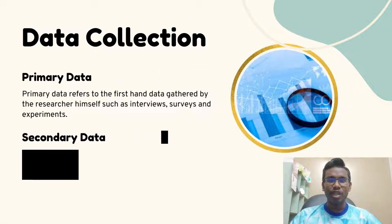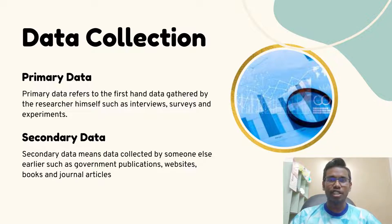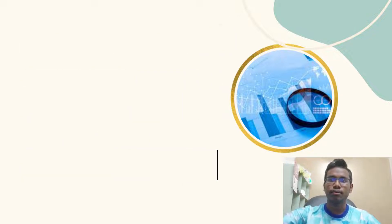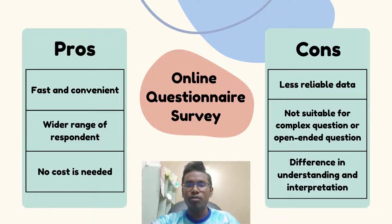Hello everyone, I am Taunesh and I will be talking about data collection today. Firstly, primary data refers to first-hand data gathered by the researcher himself, such as interviews, surveys, and experiments. Secondly, secondary data means data collected by someone earlier, such as government publications, websites, books, and journal articles. The data collection method used by our group for this assignment was through primary data, which is through an online questionnaire survey.